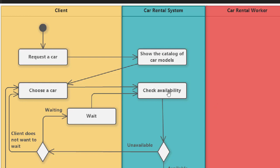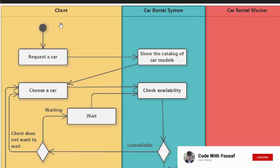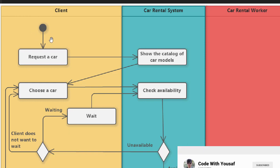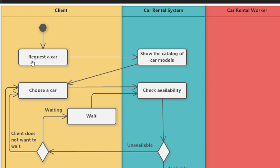In this video I will explain an activity diagram for a car rental system. We have three objects: client, car rental system, and car rental worker — those who are working in this system. This black circle is the start point.